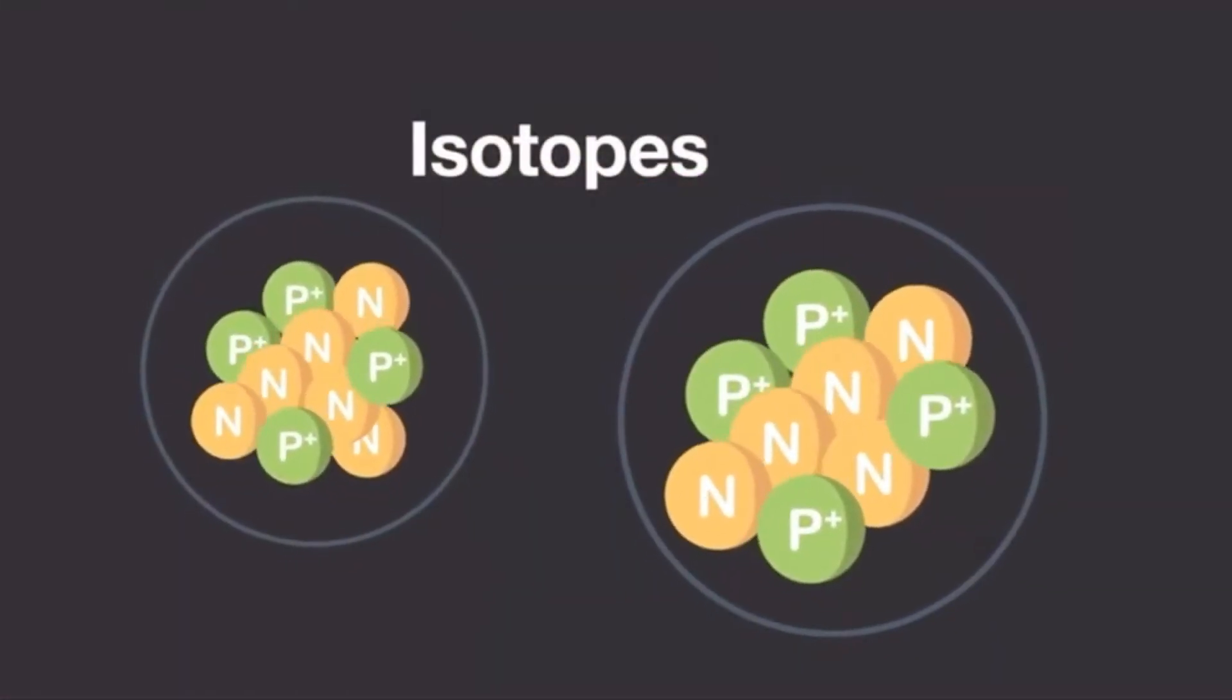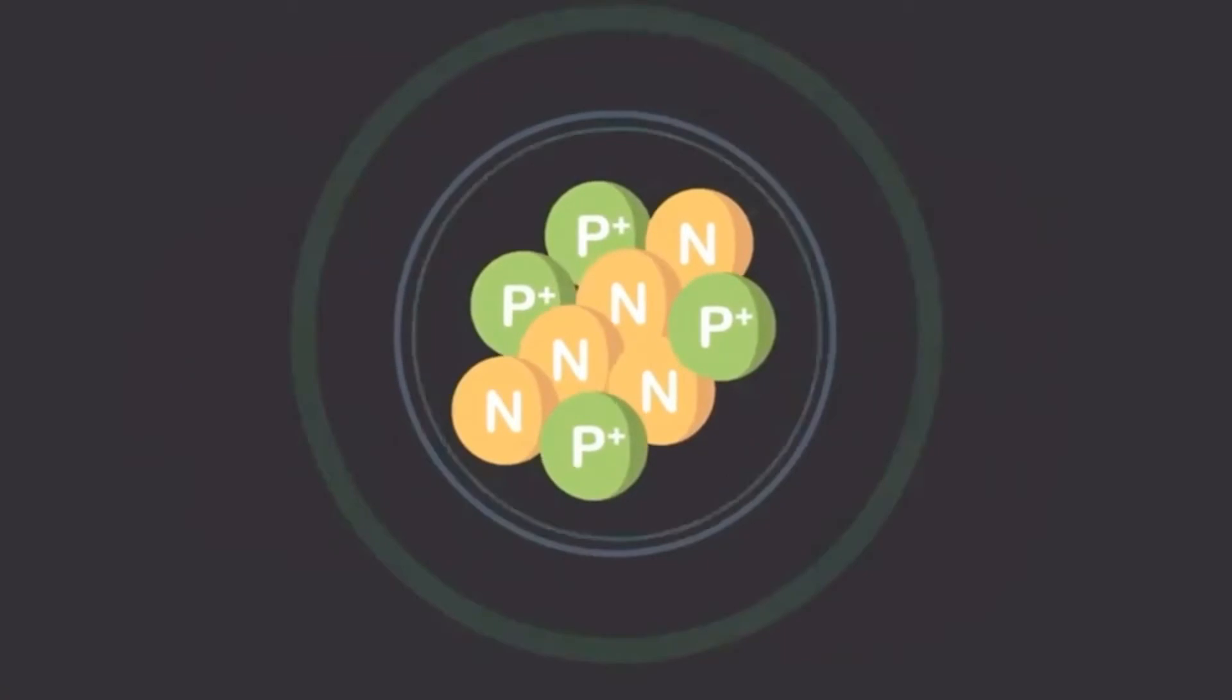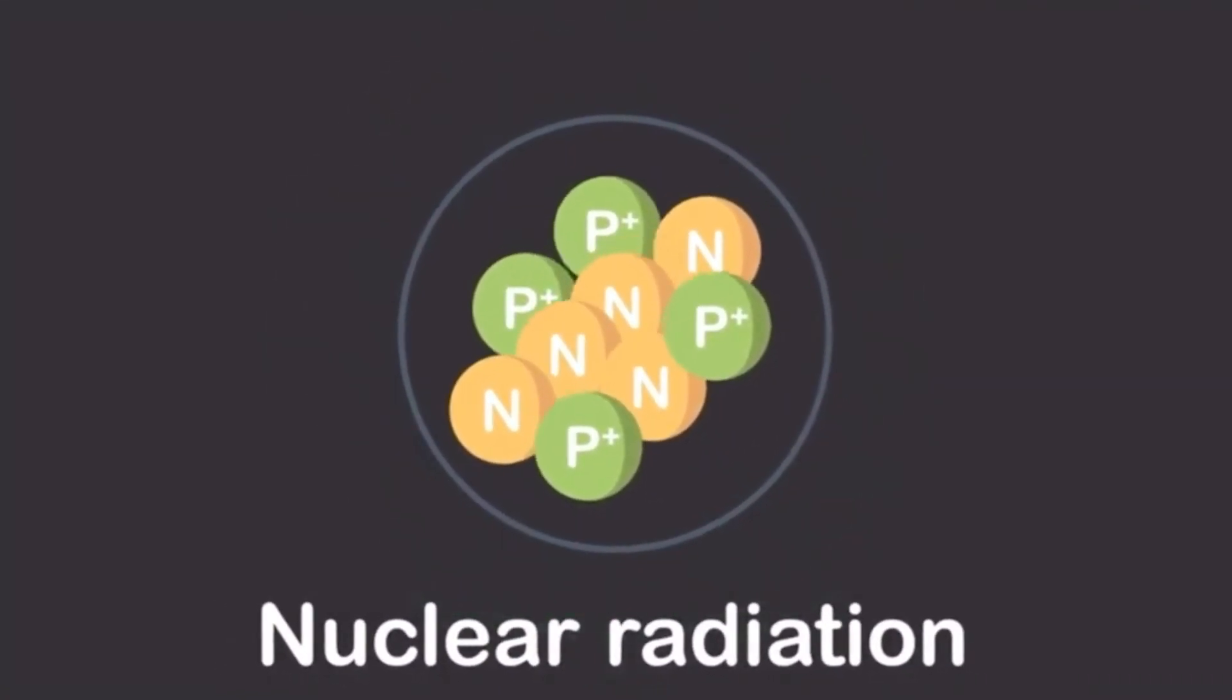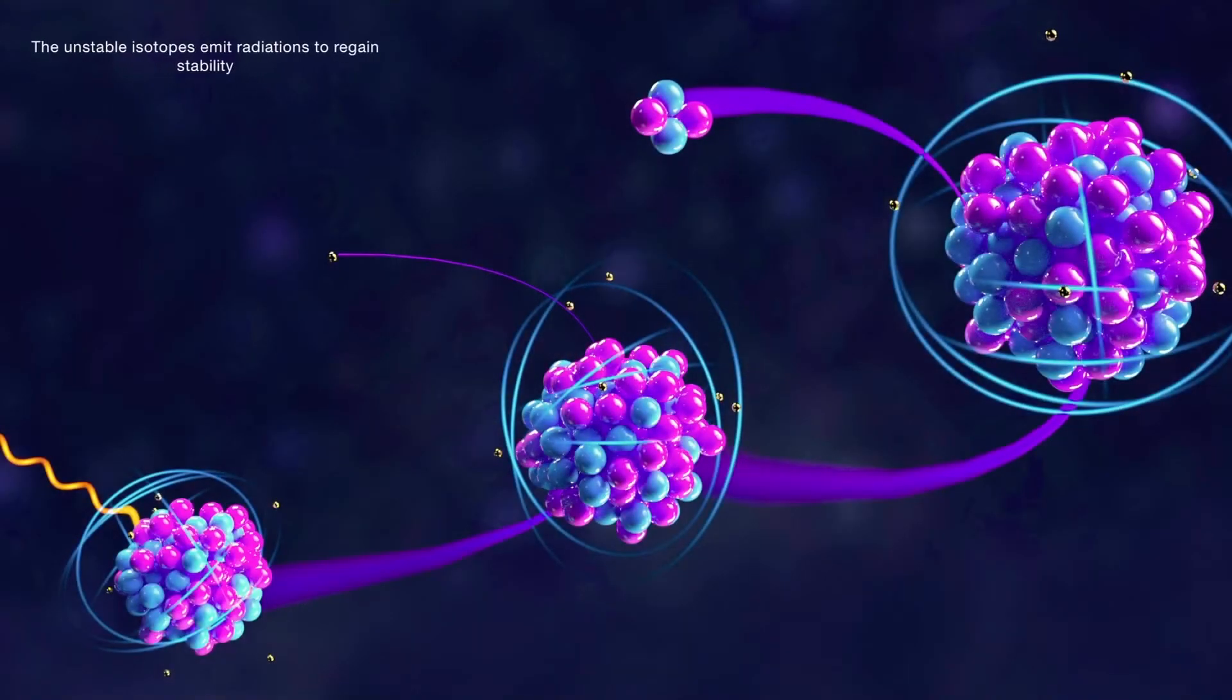These radioactive isotopes tend to regain their stability by spontaneously emitting radiations, which are known as nuclear radiations. Normally, we see three types of nuclear radiations. The isotope might emit alpha radiations or alpha particles, beta radiations or beta particles. With either of these radiations, the isotope may or may not radiate gamma rays or gamma particles.